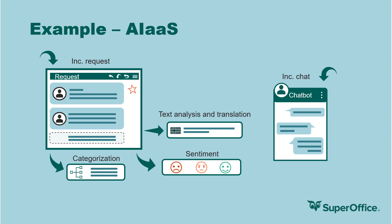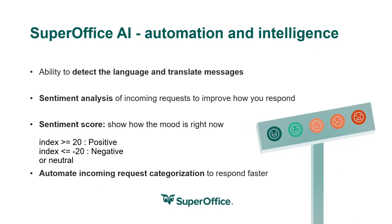We'll also have a sentiment analysis of incoming requests to improve how you respond. With the sentiment score, which shows the mood of the message right now — for example, if it's positive it will give you a happy smiley, and if it's negative, a sad smiley. By using this score, we can also automate incoming request categorization to respond faster. For example, we can show the sentiment on the cases and use selections to get an overview, or use scripts to automatically set the request with higher priority and urgency.